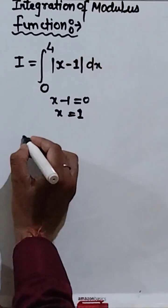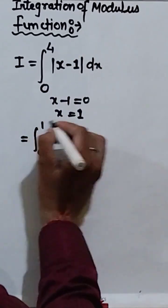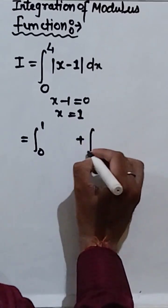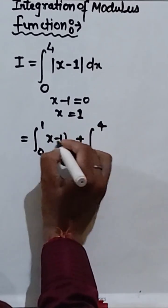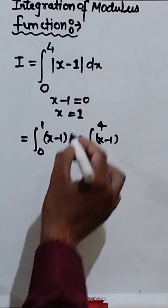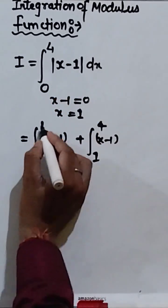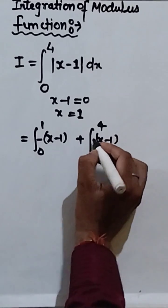So, this interval we can write as 0 to 1 and 1 to 4. We can write x minus 1 and x minus 1. If you put x equal to 1, between 0 to 1 this will be negative, between 1 to 4 this will be positive.